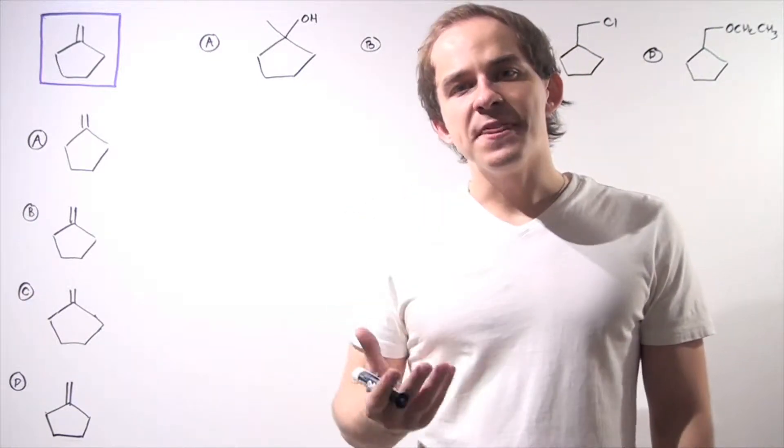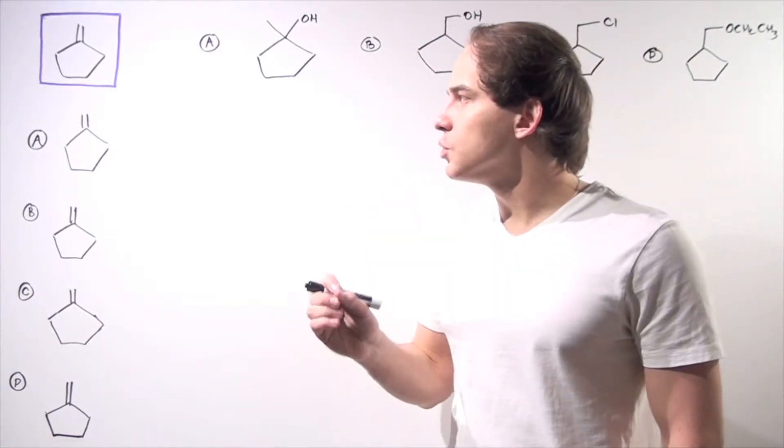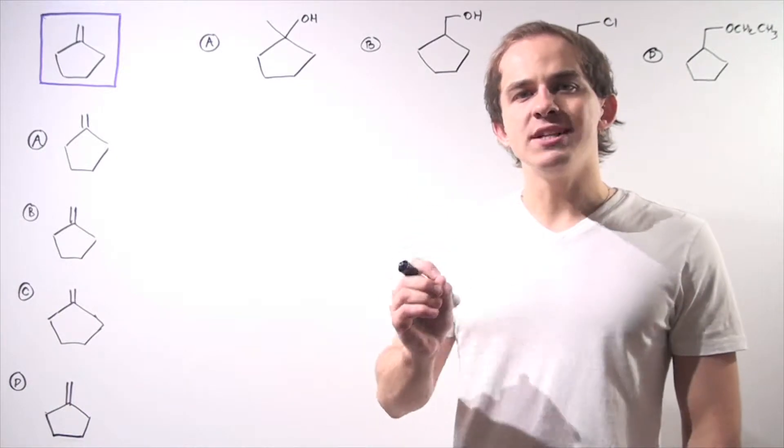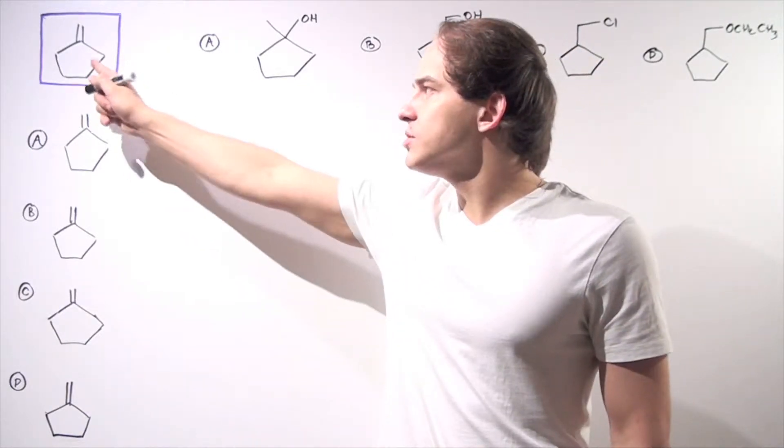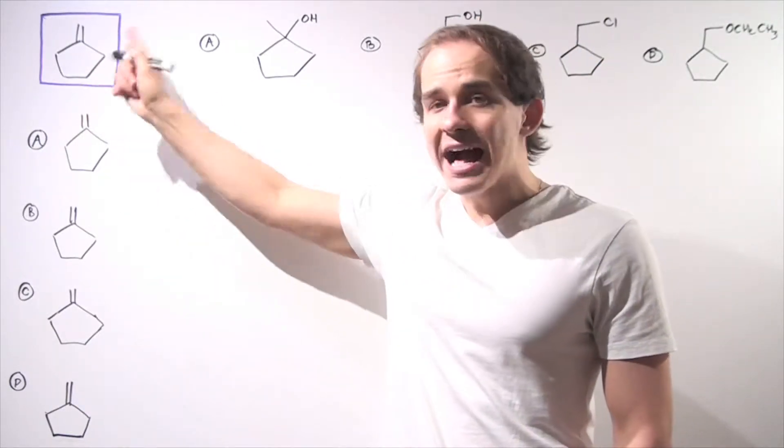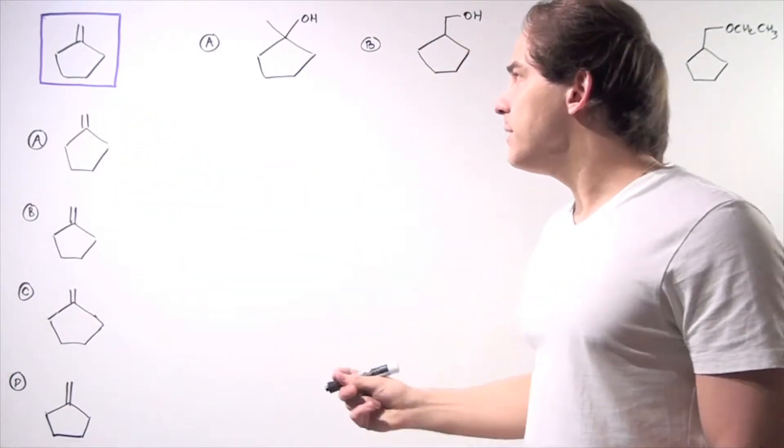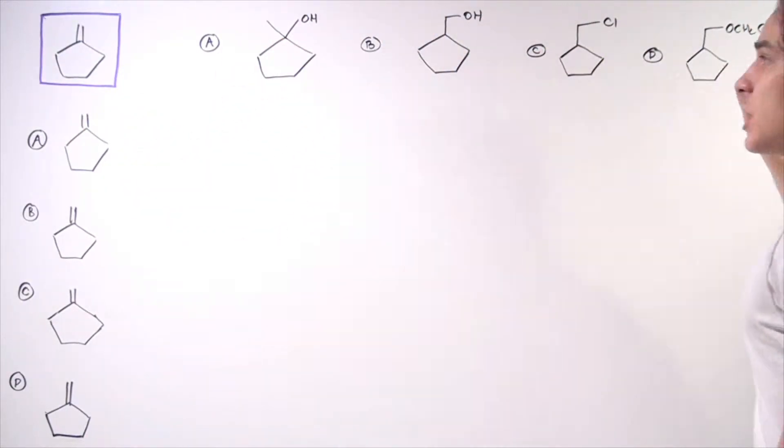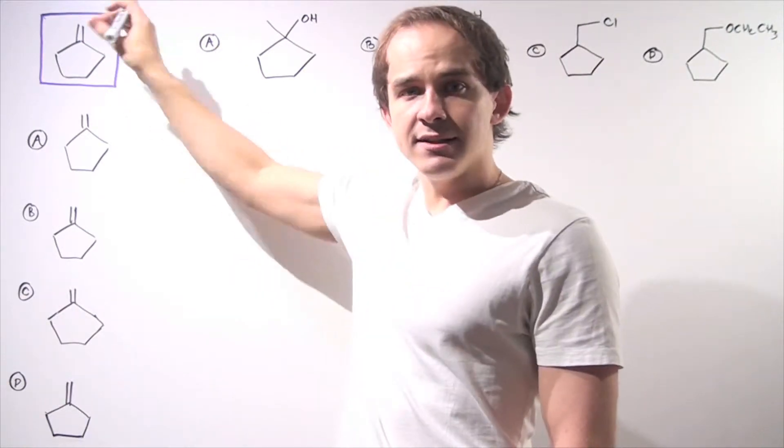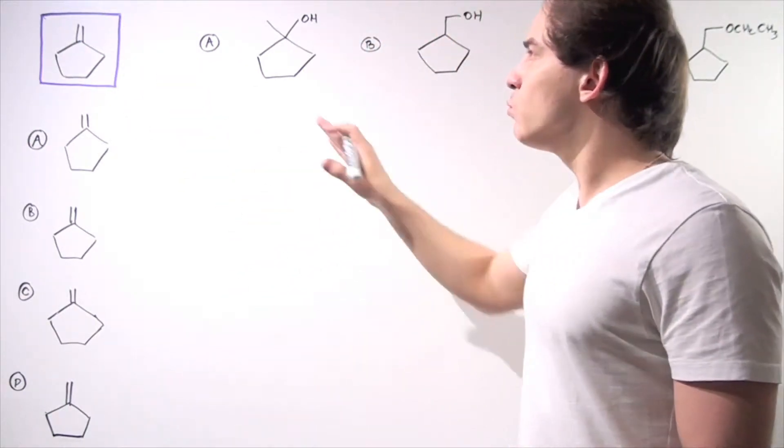Let's continue our synthesis of our molecule. We want to begin with the following alkene starting material and build four different products from this same alkene. Let's begin with product A.